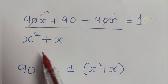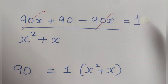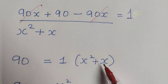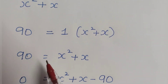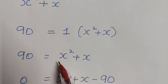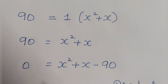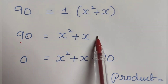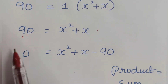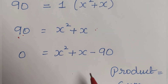Transporting the denominator to the other side, division becomes multiplication: 90 equals X squared plus X. Transporting 90 to the other side gives 0 equals X squared plus X minus 90.